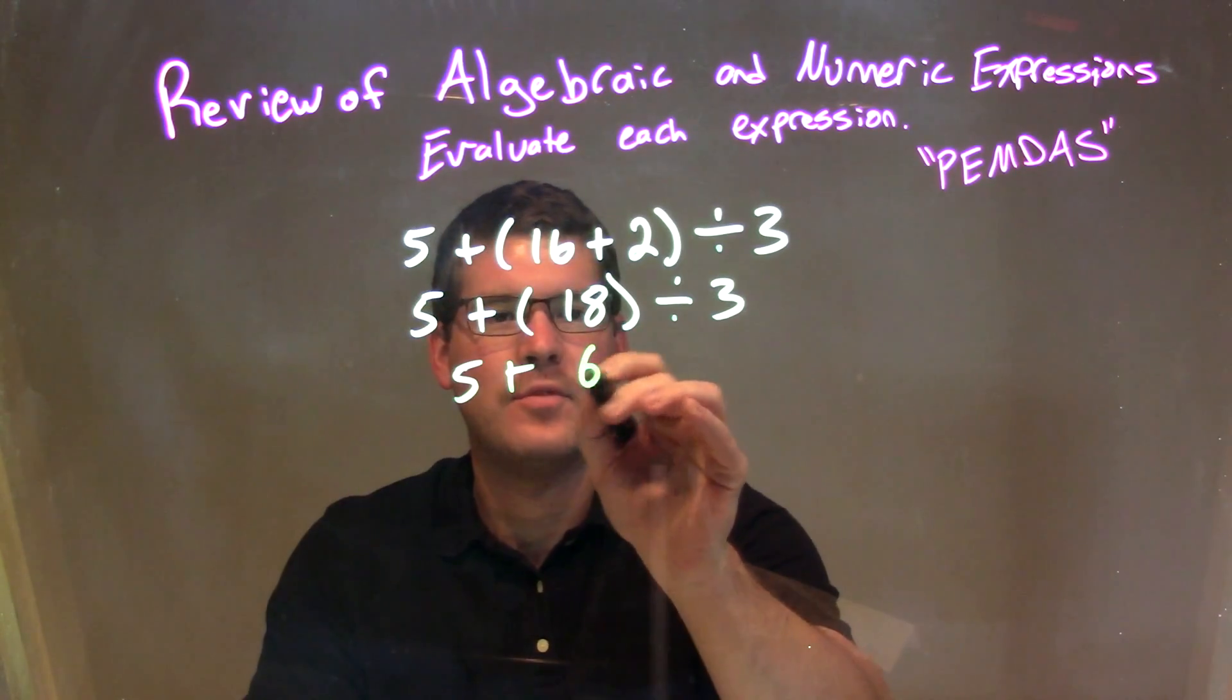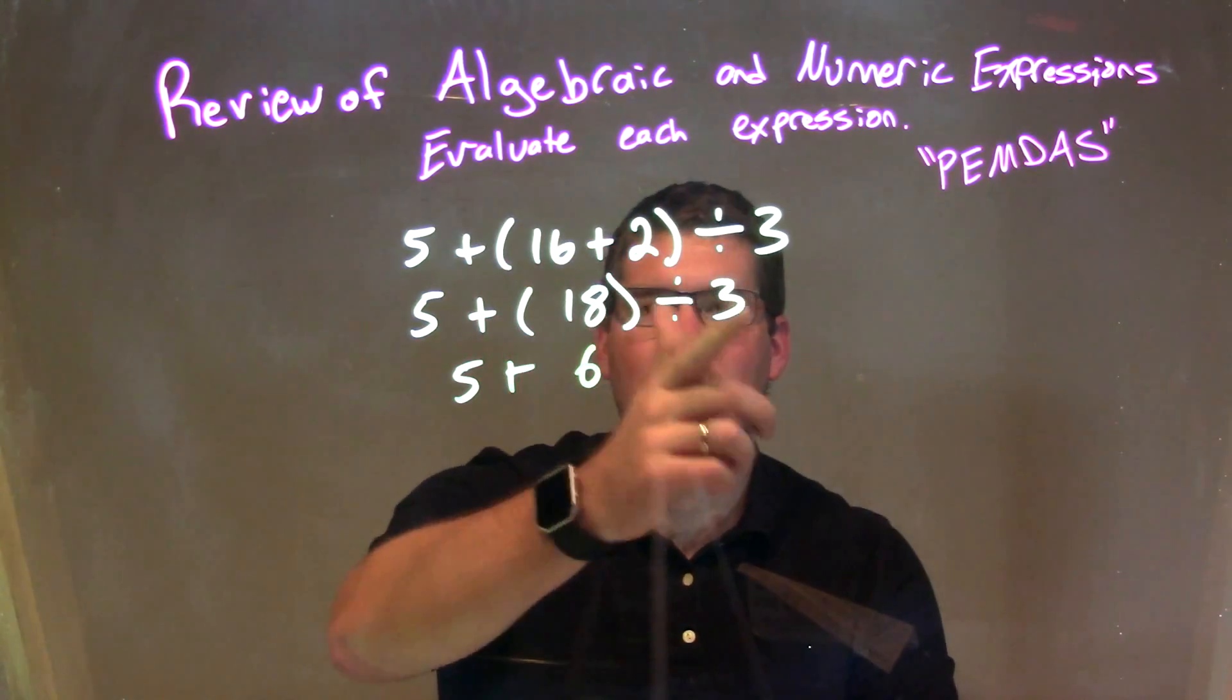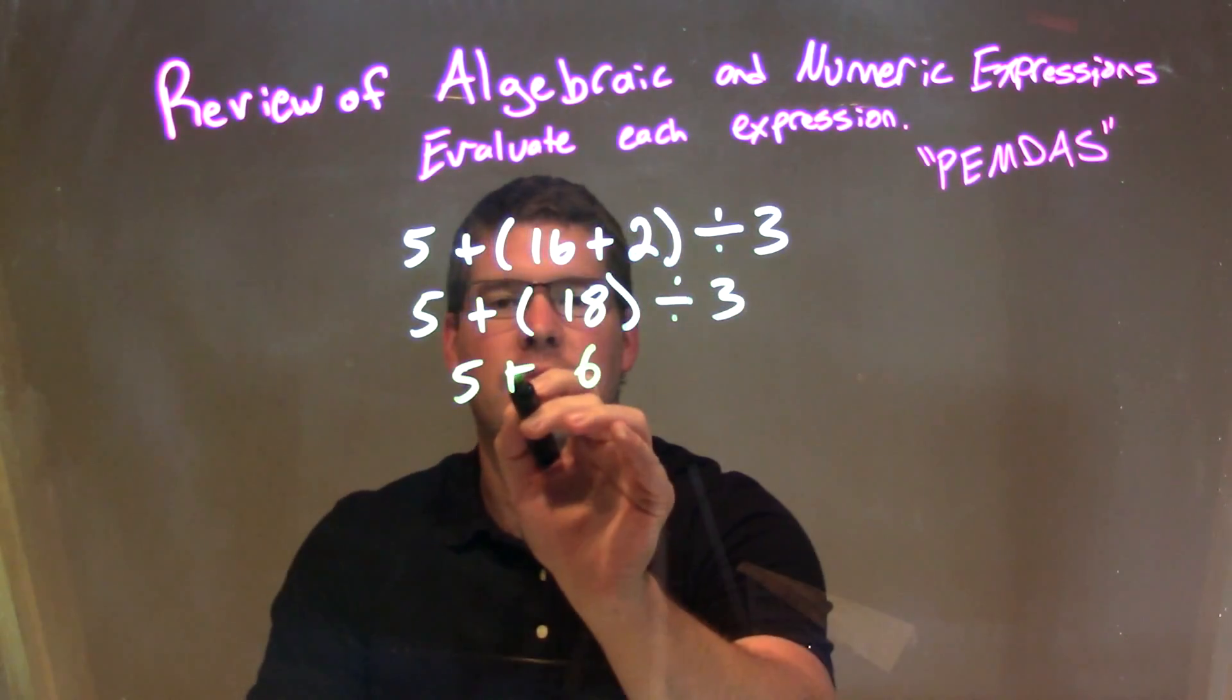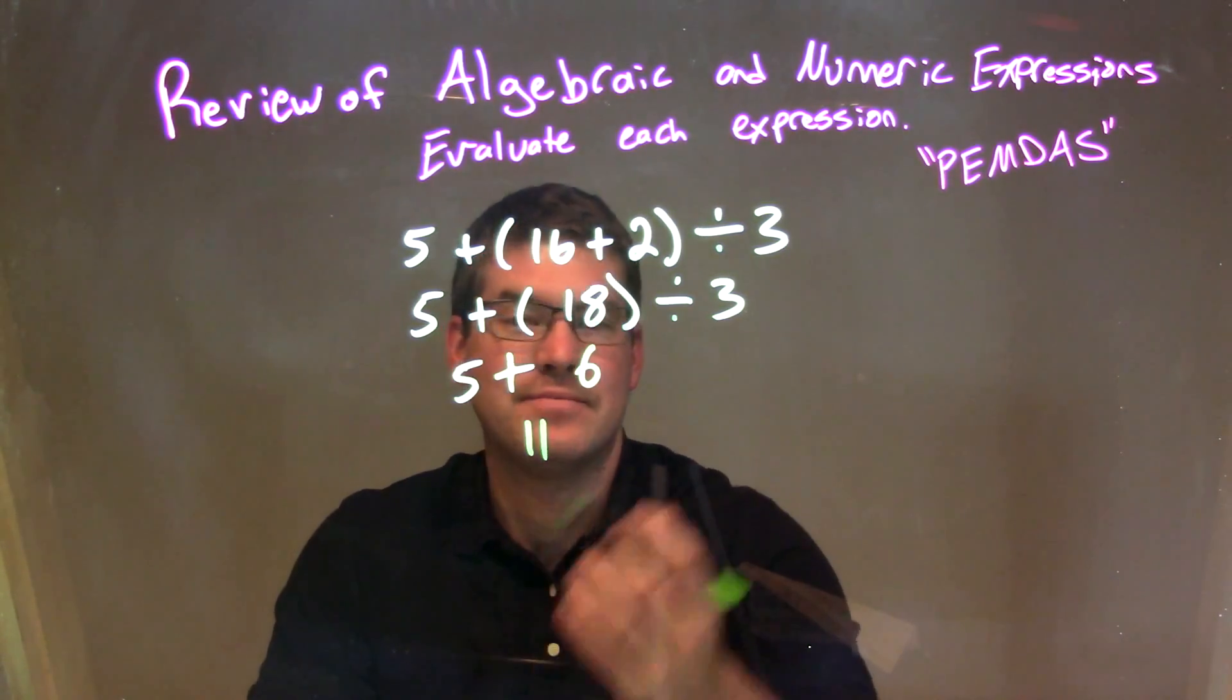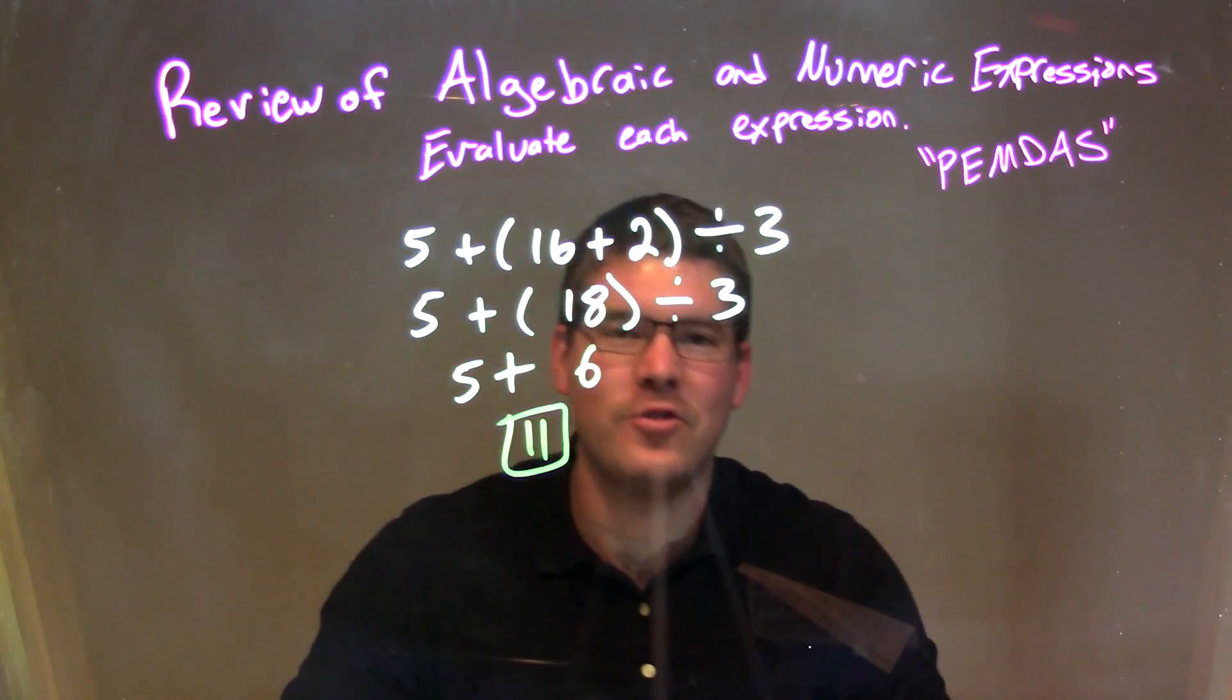So we have 5 plus 6. 18 divided by 3 is 6, and then we have 5 plus 6 right there. So 5 plus 6 comes out to be 11. And there we go. Our final answer here now is just 11.